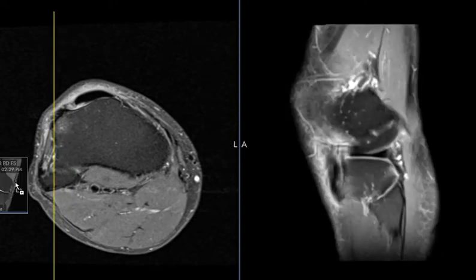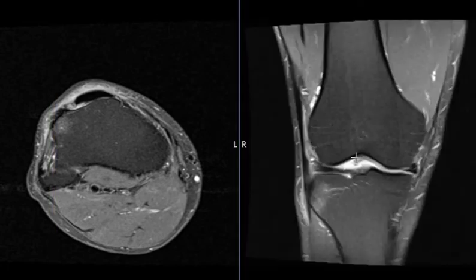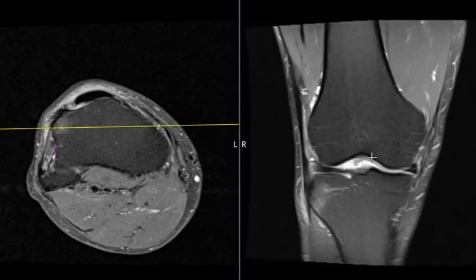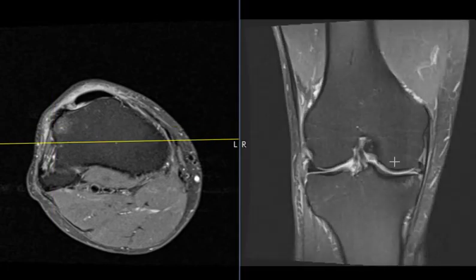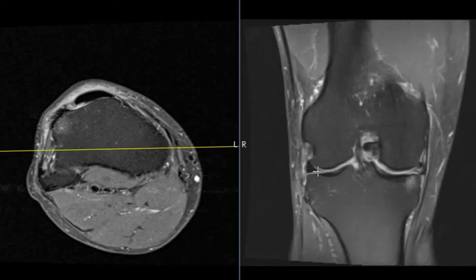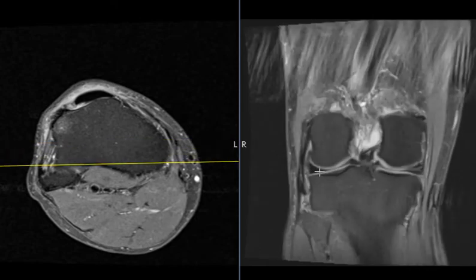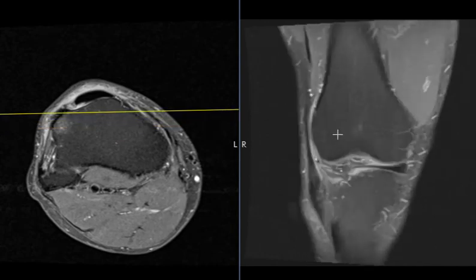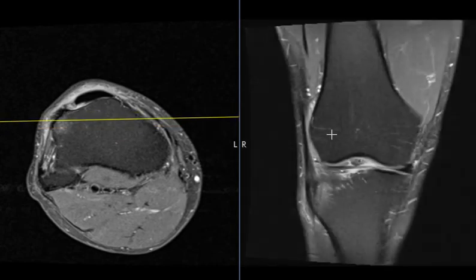Also, we have another view of the same thing. If we look on this coronal view, there's a view straight ahead where we can see the femur up top, tibia down below. We see the meniscus out here — the lateral meniscus. And if we go more forward we see abnormal signal between the femur here laterally.